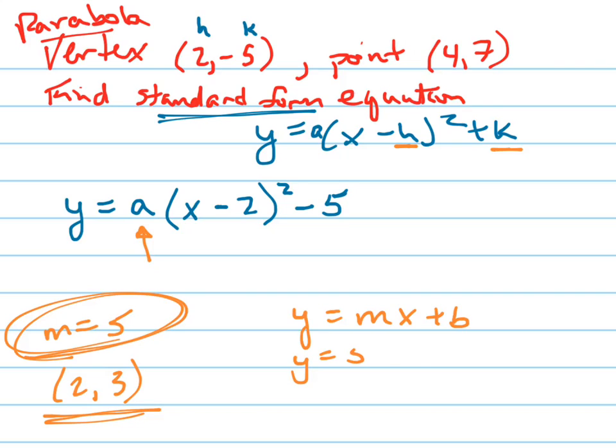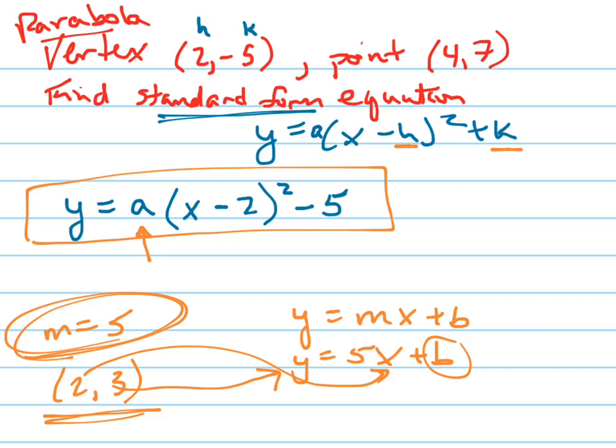And we wrote Y equals 5X plus B, and then we plugged in 2 and 3 to find B. And we're doing that exact thing, but we're doing it for quadratic. So we have the vertex, we have H and K in this equation, and now we just have to find A. See how that's the same kind of concept? And that's what we're doing. So let's do that.